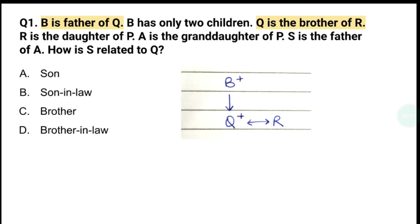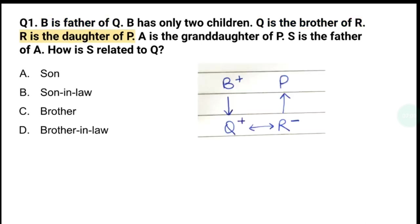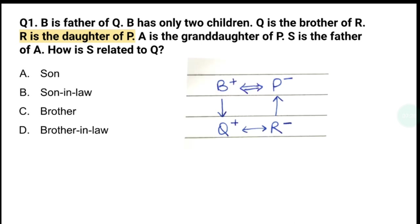अभी R का gender हमें यहां पर नहीं पता। तो R is the daughter of P, तो R का gender पता चल गया — R के ऊपर minus का sign लगाया। साथ ही उसके एक generation ऊपर P है। R जो है P की daughter है। अब यह जो दोनो brother-sister हैं Q और R, इनके father हैं B। तो P जो है वो mother हो जाएगी। तो इनका husband-wife का relation double line से ऐसे show कर लेंगे। साथ ही P का gender भी हमें sure मिल गया।